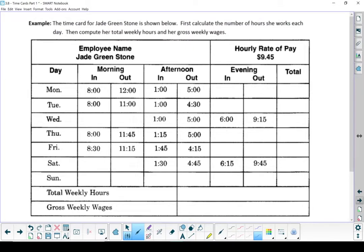Let's look at an example time card for Jade Greenstone. The steps say first calculate the number of hours she worked every day, then compute her total weekly hours and her gross weekly wages. Anytime there's nothing written in a box it means she must not have worked those times.